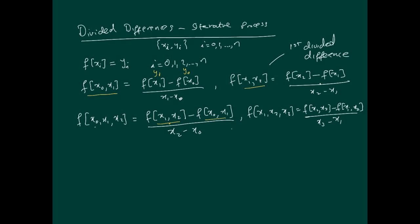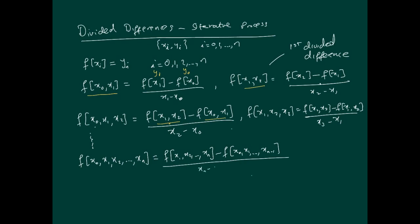In this manner we can continue all the way down, adding one more point each time. The idea is that we have a method that builds upon previous information. So for the nth divided difference, we ignore x0 to get f[x1, x2, ..., xn], subtract f[x0, x1, ..., xn-1], and divide by xn minus x0. That's the notation we'll be using.